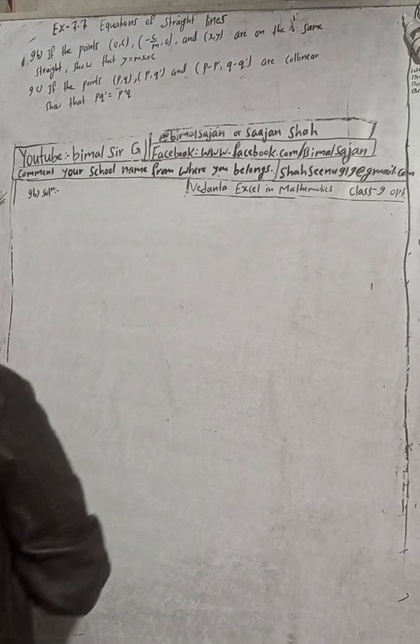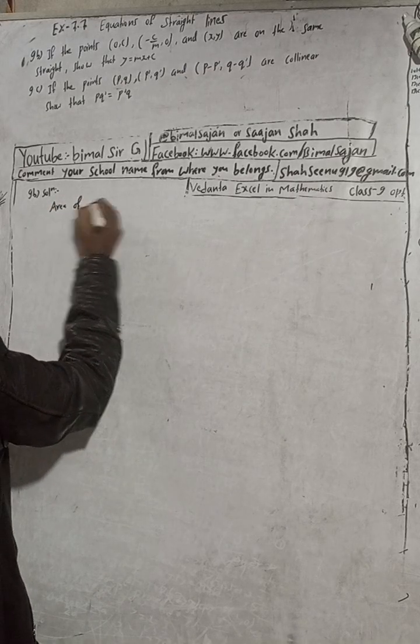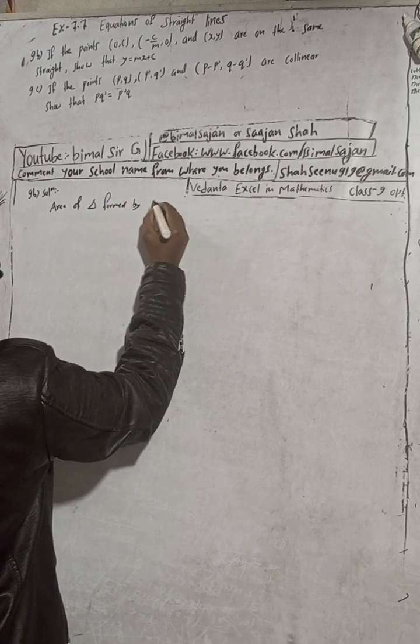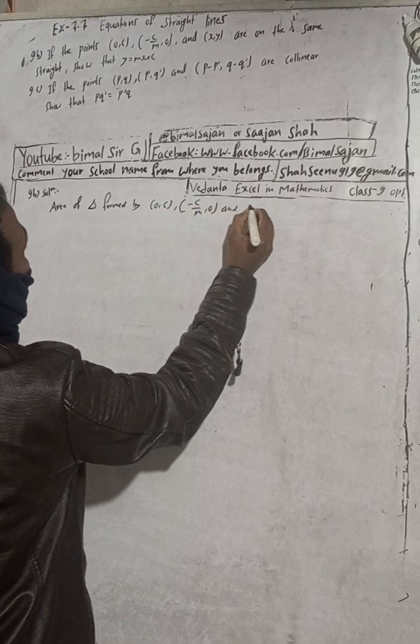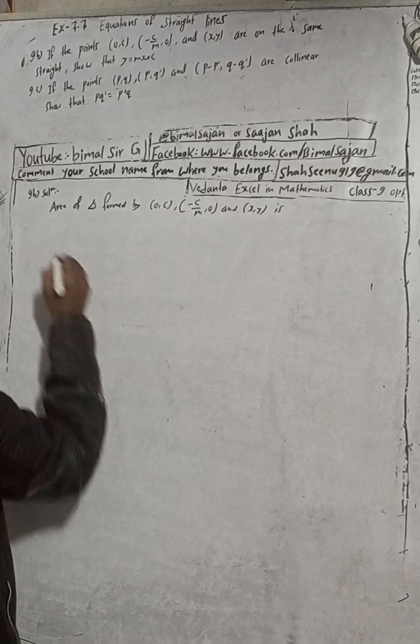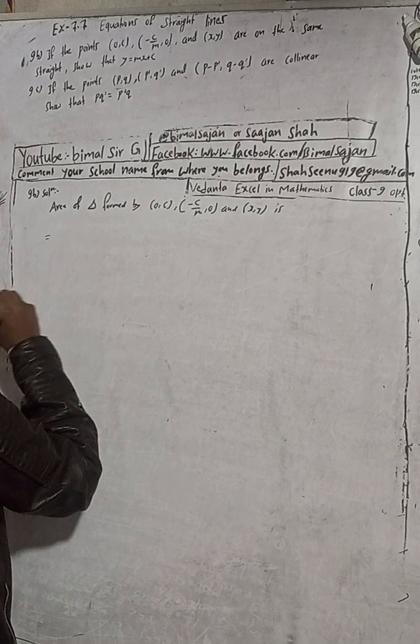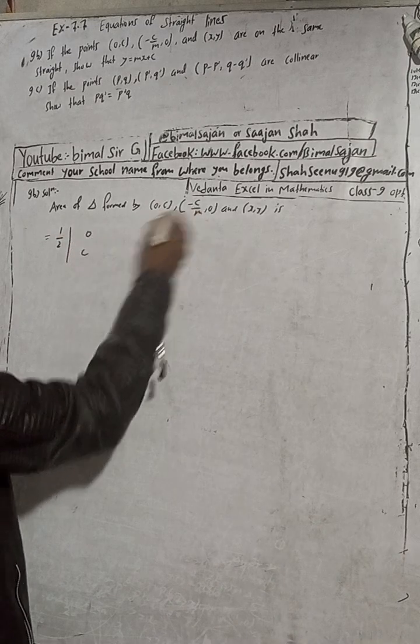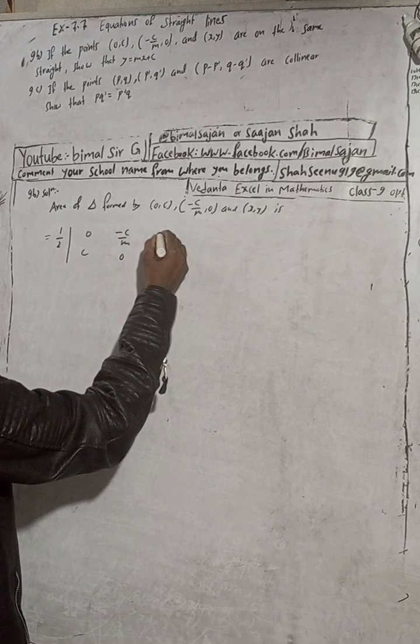So, area of the triangle. We have three points: (0, C), (-C/m, 0), and (x, y). The area formula is one-half times the determinant.